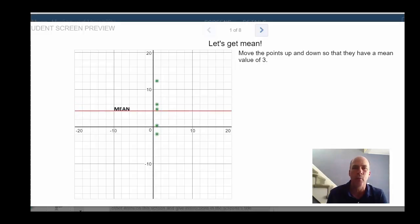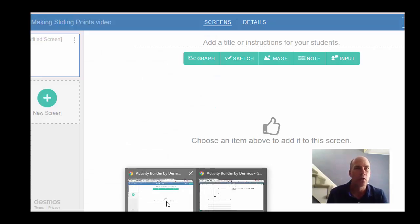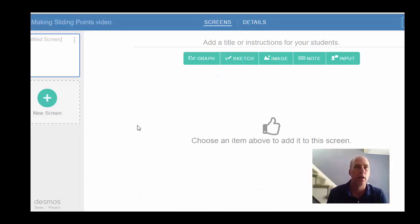So let's find out how we add these movable points to an Activity Builder. So I've started a new Activity Builder screen here, and in my screen I'm going to add a graph.